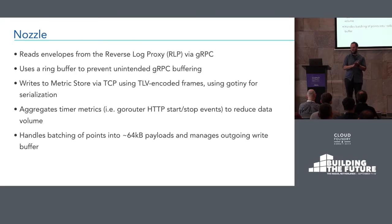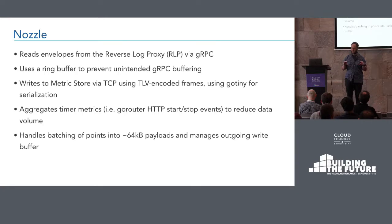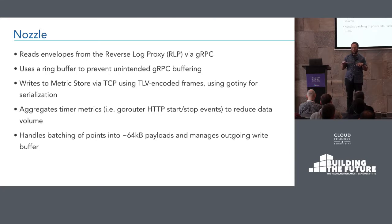The nozzle reads from the reverse log proxy over gRPC. If you look at a lot of the current log reader design and the old LogCache design, there was a lot of gRPC everywhere. We've started getting away from that because gRPC is a very robust framework, but it also comes with a lot of overhead. When we looked at what we were doing with the nozzles — just taking points from one place and writing them to another — gRPC is built on protocol buffers, a great serialization format, but when you have two processes that always get updated at the same time, it doesn't buy you much. So we got rid of all the gRPC we were using internally. We still have to use gRPC with the reverse log proxy, but inside Metric Store, all writes between processes happen as type-length-value encoded frames over TCP.